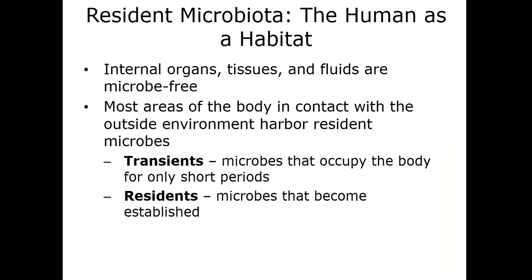Our internal organs and tissues, for the most part, are microbial free. Most of the outside of our body, however, has both what we call resident flora — microbes that live within and on our bodies all the time — and transient flora, which are microbes acquired and residing with us for a very short period of time. Transient flora may be acquired by touching a doorknob or a surface on a bus or an airplane, and some of those microbes adhere to your body but don't normally live there and may be removed through handwashing.